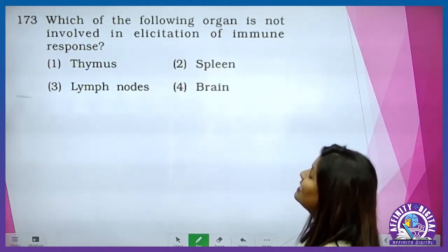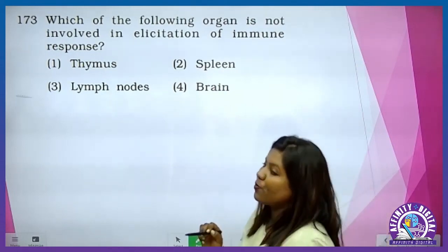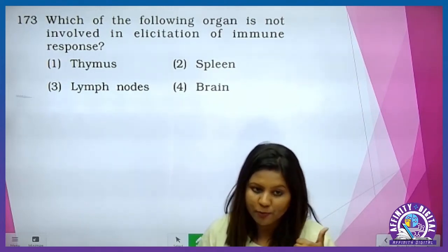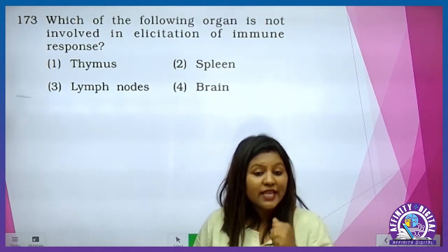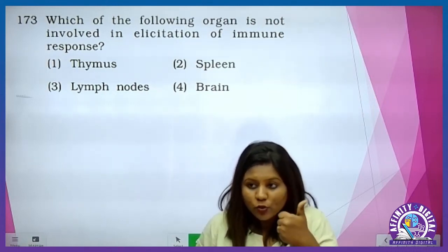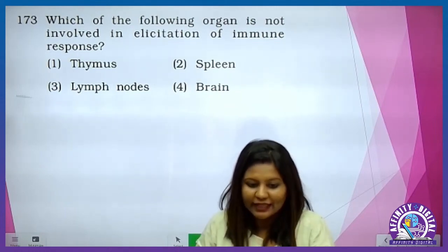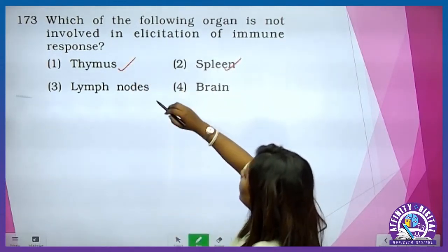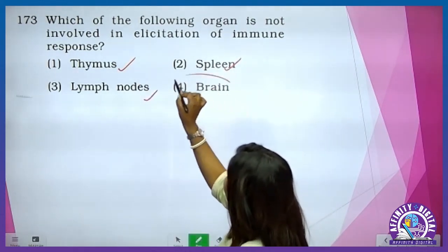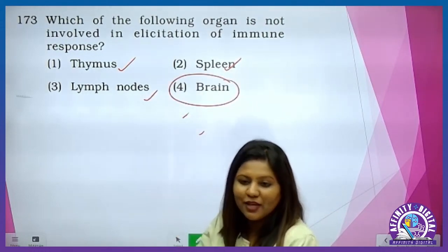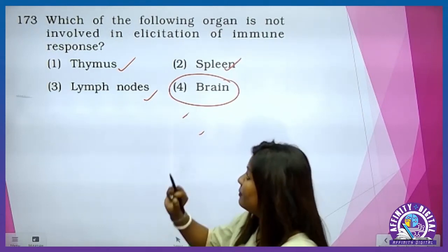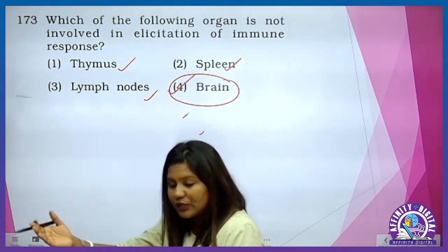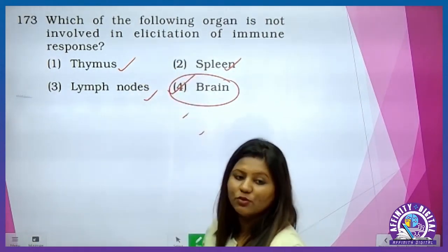Which of the following organs is not involved in the elicitation of the immune response? Immune response mein primary and secondary lymphoid organ sabse important role play karta hai. Primary mein lymphocyte banta hai aur mature hota hai. Secondary mein pathogen se fight karne ka platform milta hai. Thymus is a primary lymphoid organ. Spleen is secondary. Lymph nodes is secondary. Brain is not a lymphoid organ — no doubt us mein macrophage bhi hai — microglial cells — jo phagocytosis perform karta hai, but it is not a lymphoid organ.